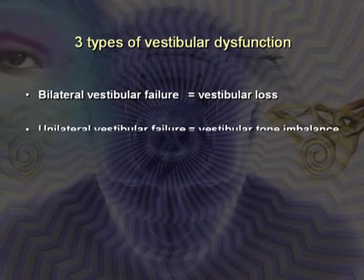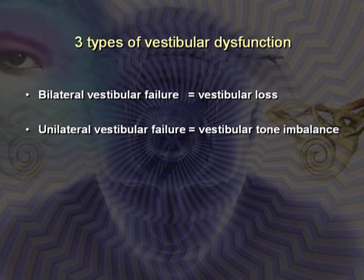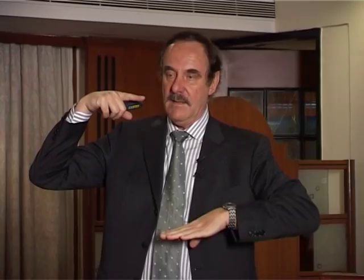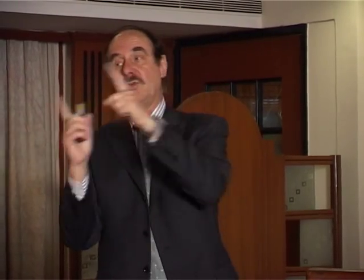Bilateral vestibular failure patients do quite well with lights on but have problems on uneven ground in darkness. Unilateral vestibular failure — the prototype being vestibular neuritis — always causes a vestibular tone imbalance. If one labyrinth fails, there is a tone imbalance causing apparent body tilt or rotation, spontaneous nystagmus in the direction of apparent rotation, and a fall towards the lesion as the patient tries to compensate.